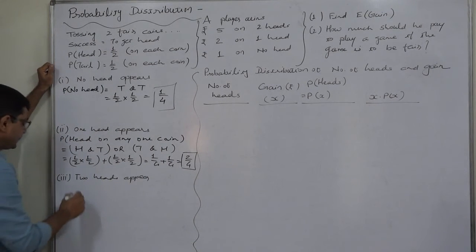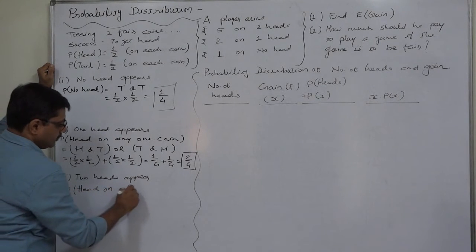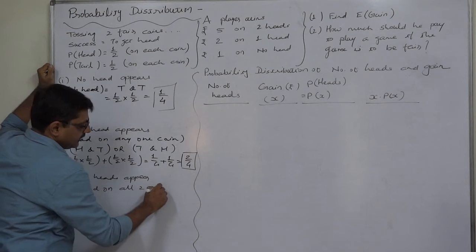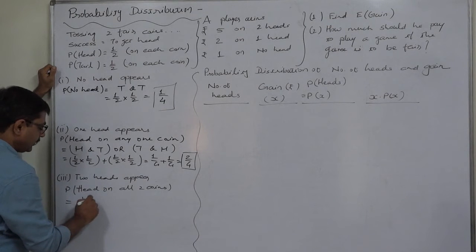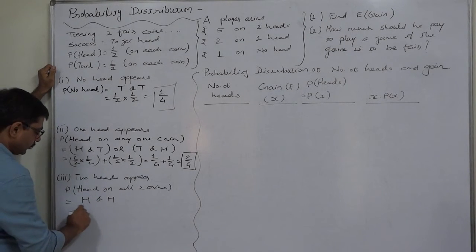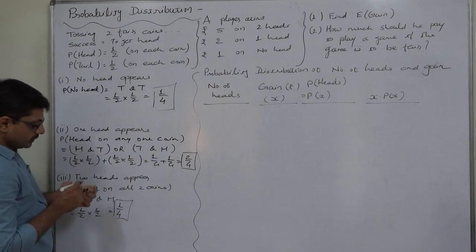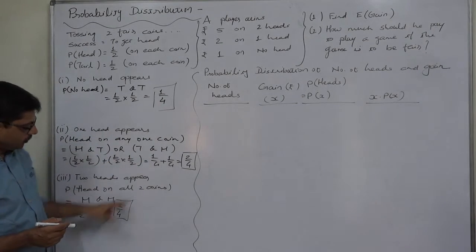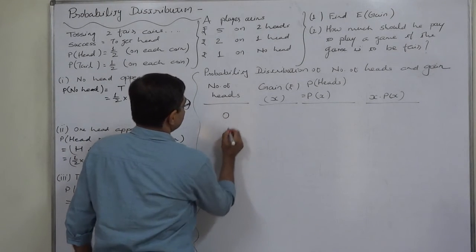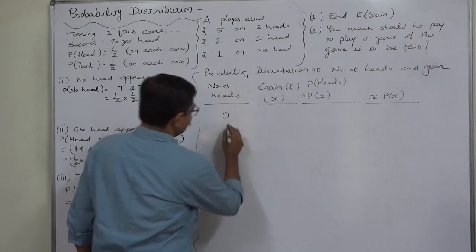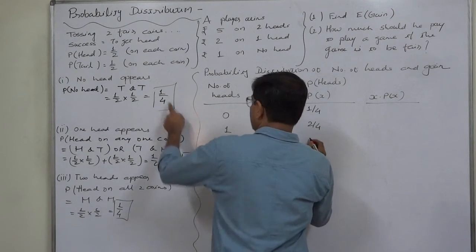For two heads — head on both coins — it is head on the first coin and head on the second coin, giving one-half times one-half, which equals one-quarter. These are three mutually exclusive and exhaustive outcomes, so the probabilities sum to one: four-quarters equals one. So: P(0 heads) = 1/4, P(1 head) = 2/4, P(2 heads) = 1/4.